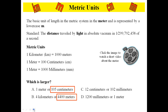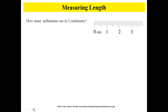Next, 12 centimeters or 102 millimeters? 12 centimeters is longer than 102 millimeters. And 1,200 millimeters or 1 meter? 1,200 millimeters is longer than 1 meter. A key thing to remember is that 1 centimeter equals 10 millimeters.